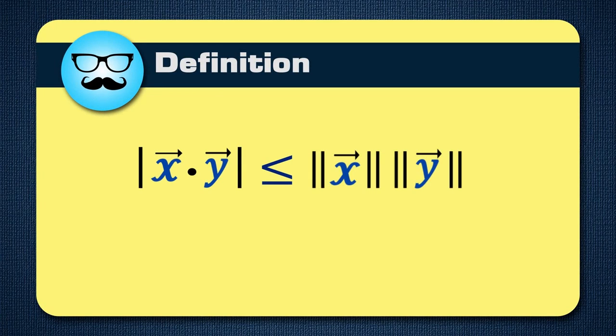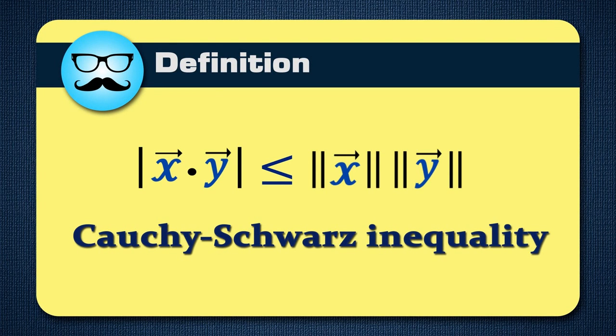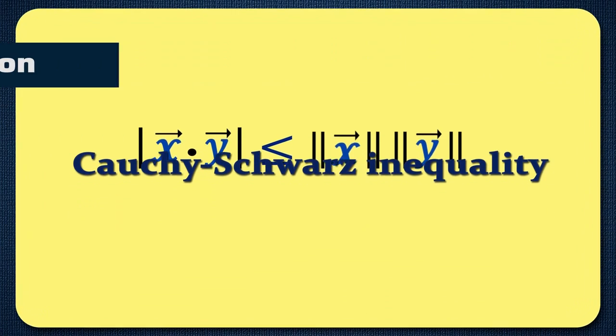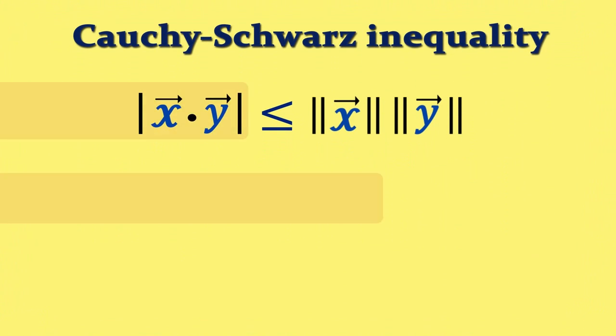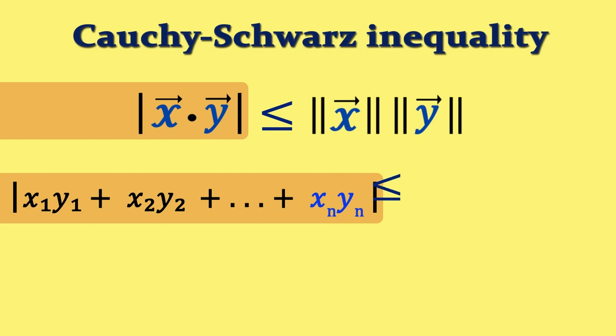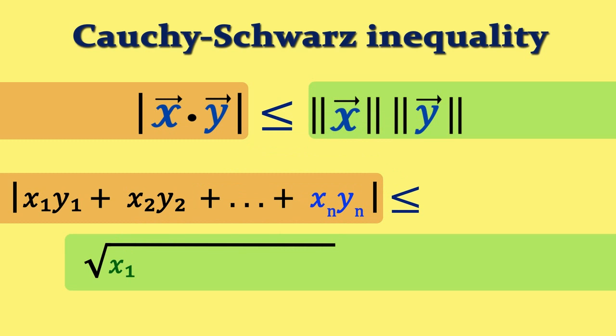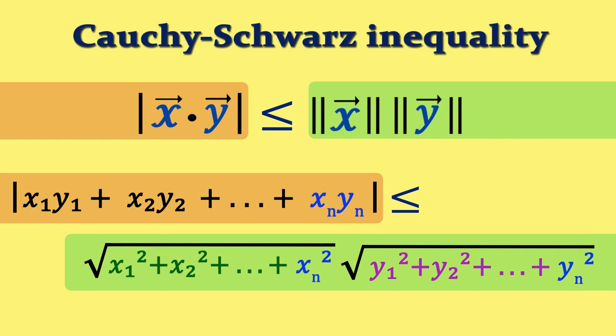This is known as the Cauchy-Schwarz inequality. Sometimes we will use its expanded notation: the absolute value of x1 y1 plus x2 y2 up to xn yn is less than or equal to the product of the square root of x1 squared plus x2 squared up to xn squared and the square root of y1 squared plus y2 squared up to yn squared.